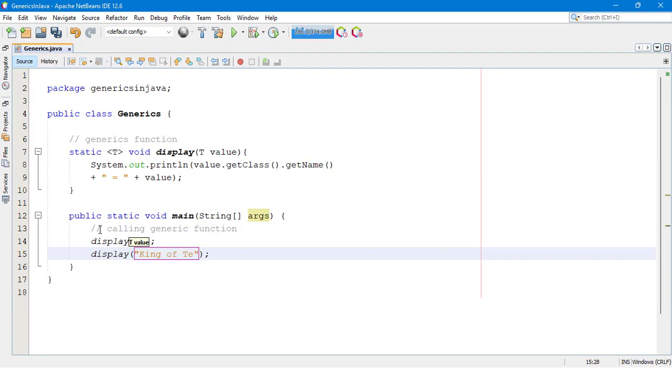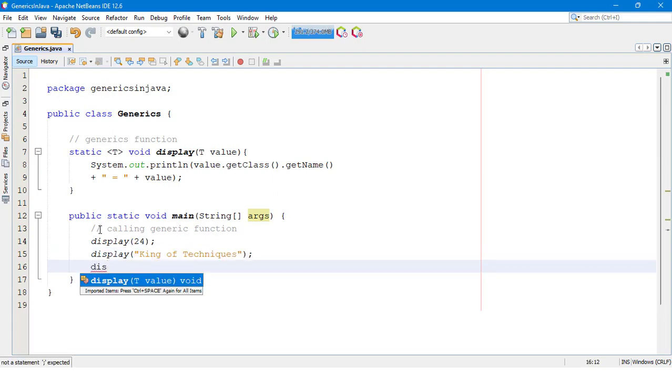I also call this function for the third time and now I pass the double value here.